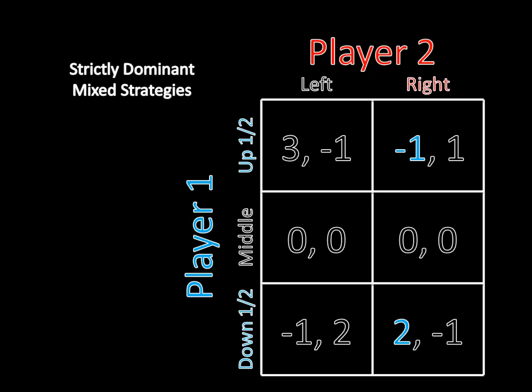So regardless of what player two chooses — whether it's left or right, or any mixture between left and right — player one gets more from playing this mixed strategy between up and down than from playing middle. By the definition of strict dominance, we can get rid of middle, because middle is a strictly dominated strategy.